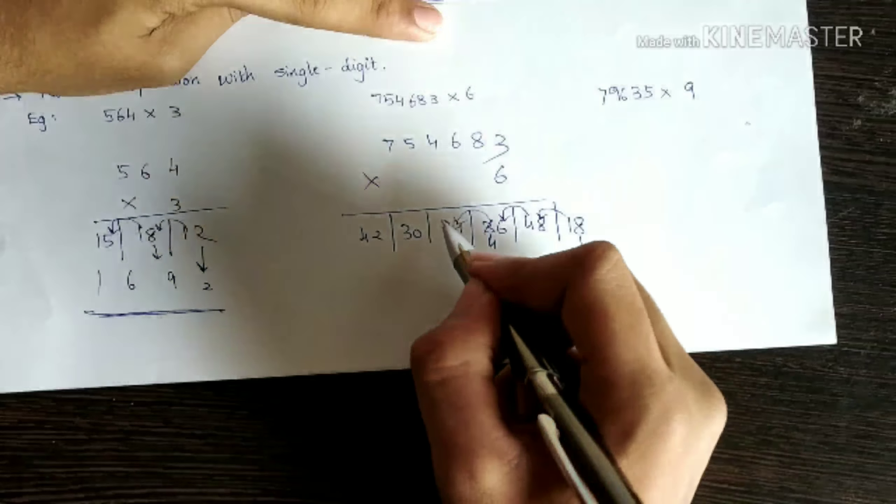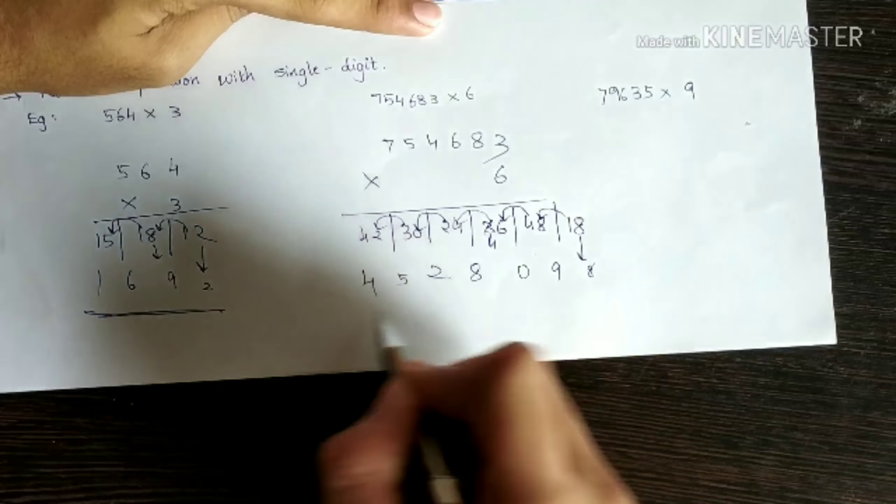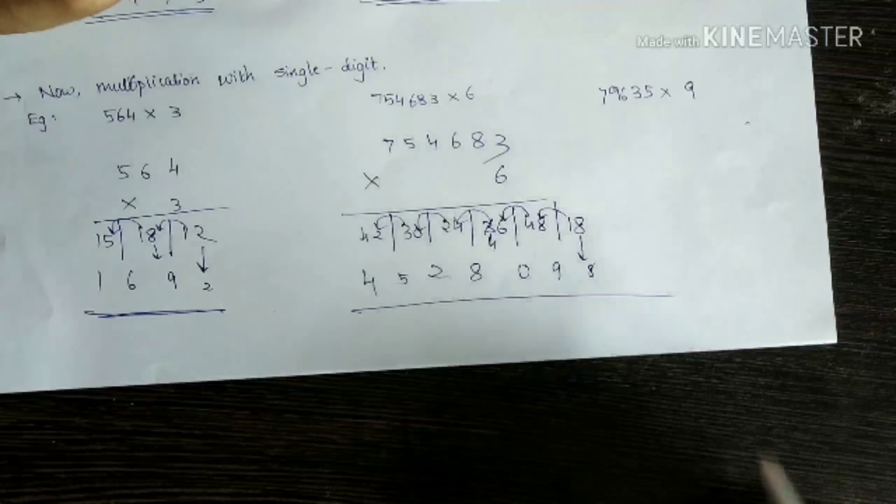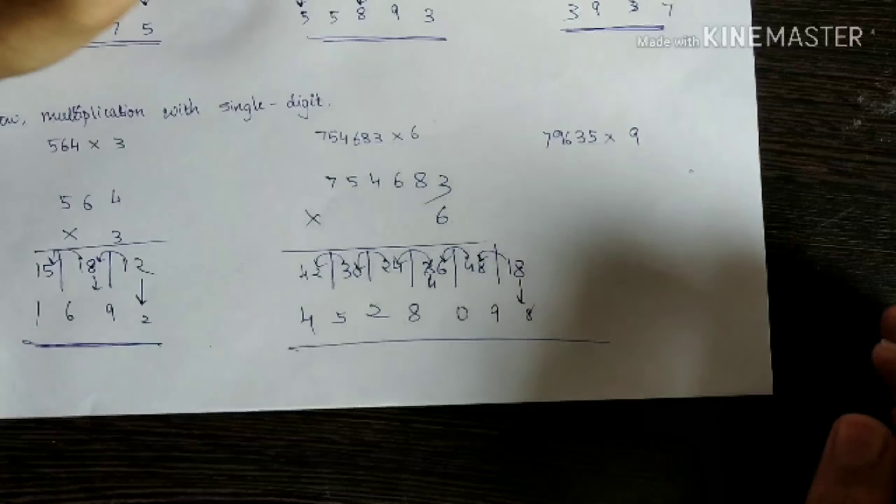Four plus four is eight. Drop it. Two plus zero is two. Three plus two is five. And four. Just drop it like that. Answer is four five two zero nine eight. You can check it out. It will be the same.